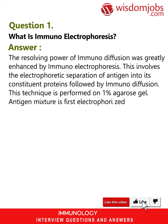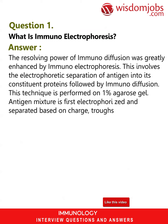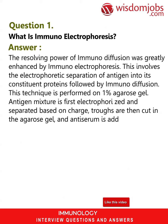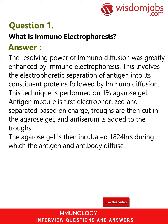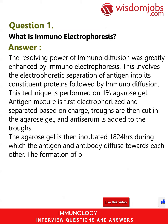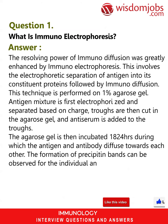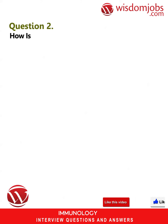The antigen mixture is first electrophoresed and separated based on charge. Troughs are then cut in the agarose gel, and antiserum is added to the troughs. The agarose gel is then incubated for 18 to 24 hours, during which the antigen and antibody diffuse towards each other. The formation of precipitin bands can be observed for the individual antigen components.